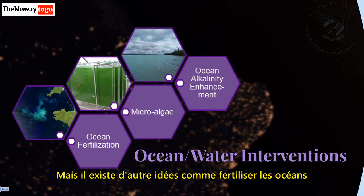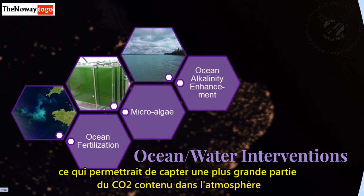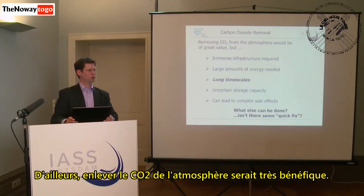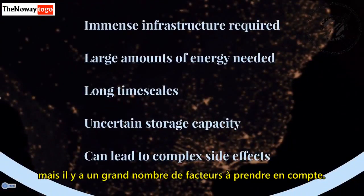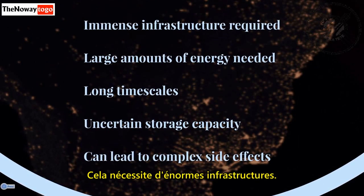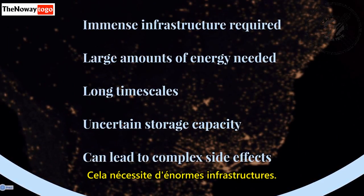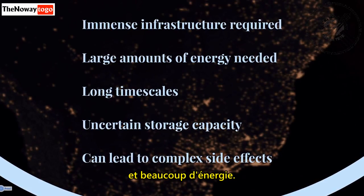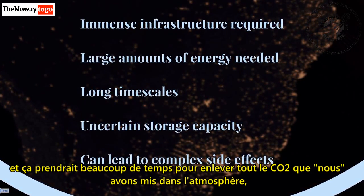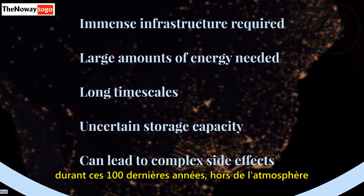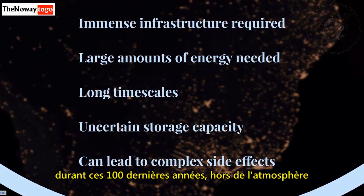But there are other ideas as well, such as adding limestone to reduce the acidity of the oceans and allow it to take more carbon dioxide from the atmosphere. Now, removing carbon dioxide from the atmosphere would be of great benefit, but there are a lot of problems to consider. It would take a huge infrastructure and a lot of energy, and it would take a very long time to get all the carbon dioxide that we've put into the atmosphere over the last couple hundred years back out.